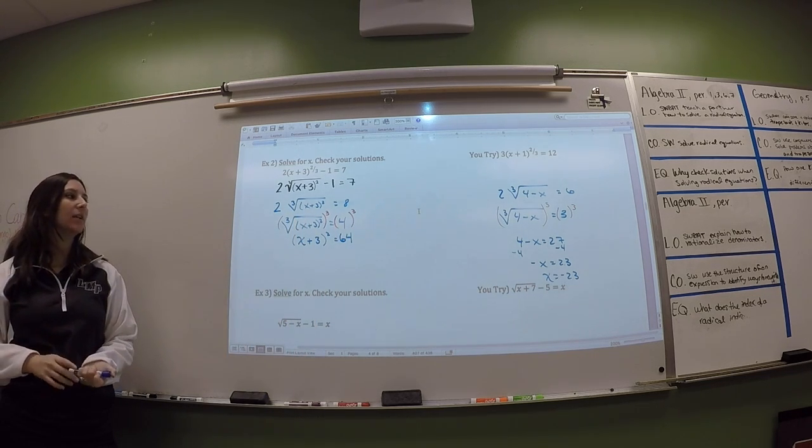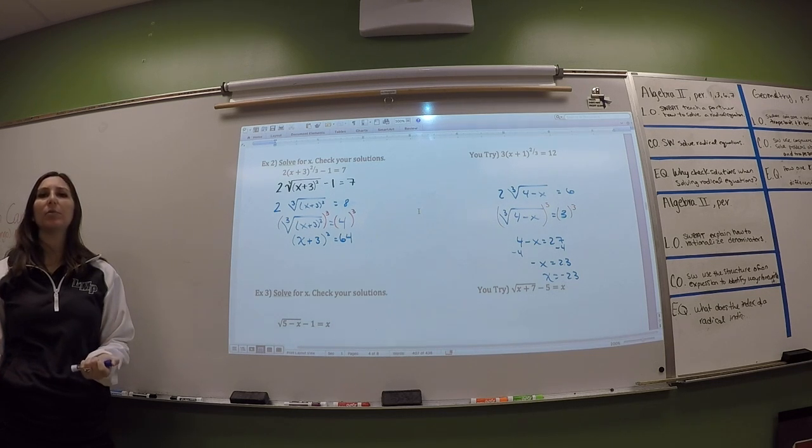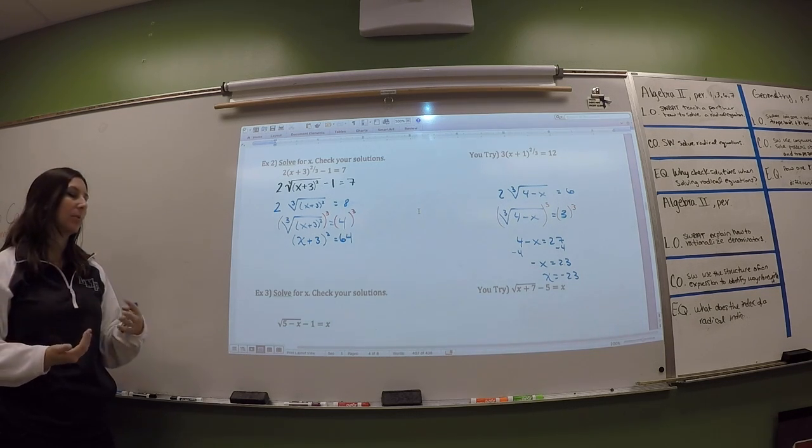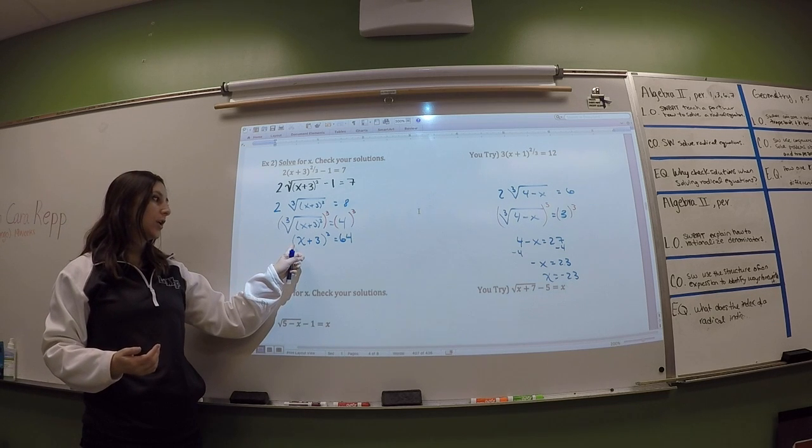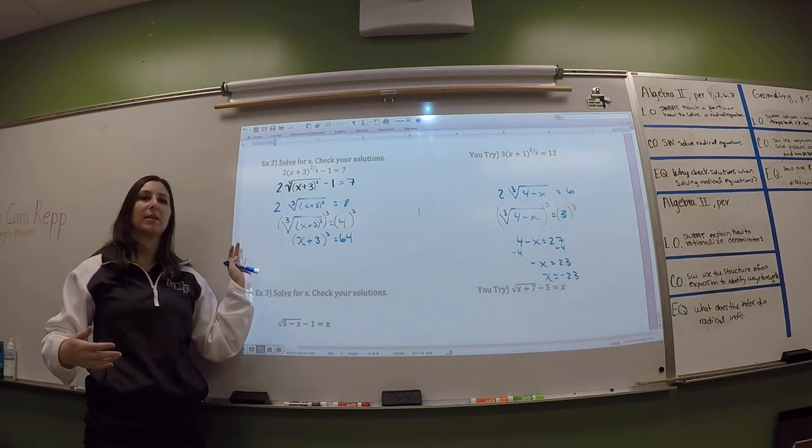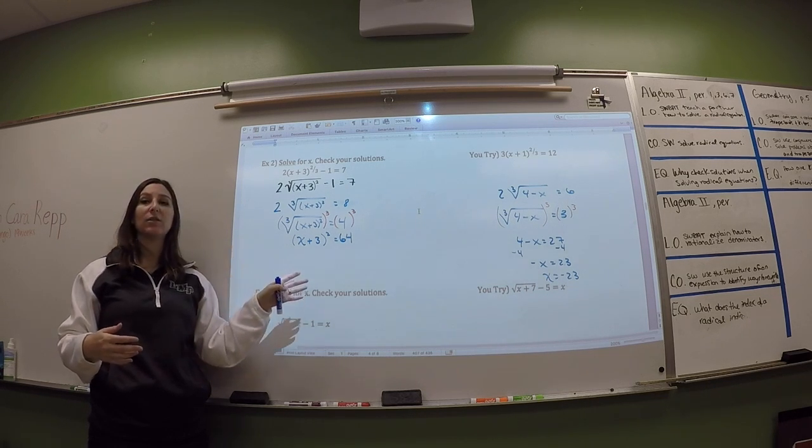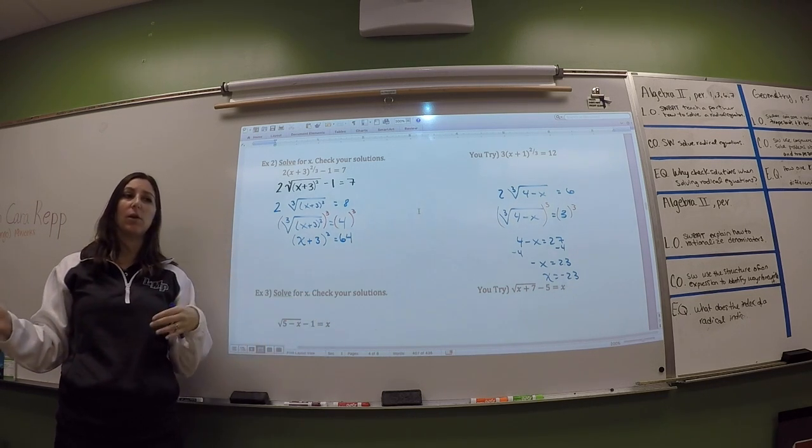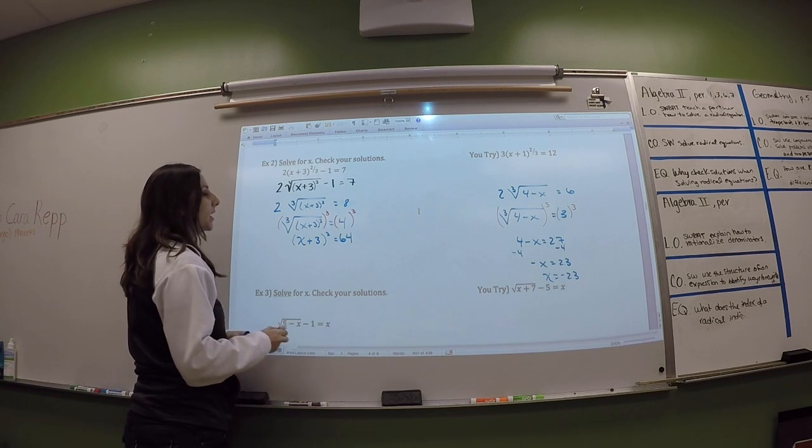And then from here you have actually a couple options. The easy, I'll show you the easy option, but just so you know, you could expand this, like, foil it out, and then subtract 64, and you would, like, factor or something. You'd solve a quadratic equation. We're not going to do that, because I think that's the harder way.